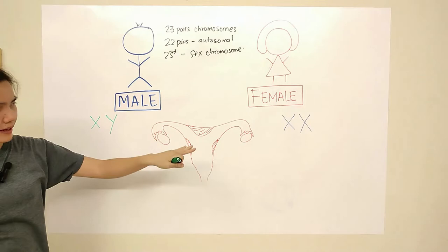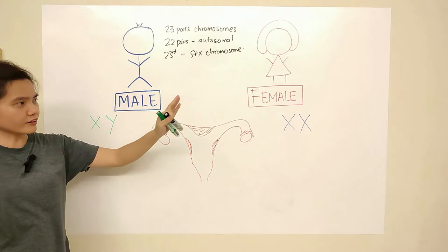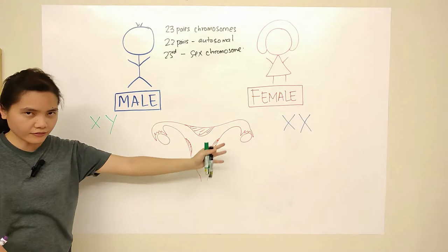In biology, for the male, the sex cells or gametes are called sperm. For the female, the gametes are called the egg, which is produced by the ovary. The sperm is produced by the testis.